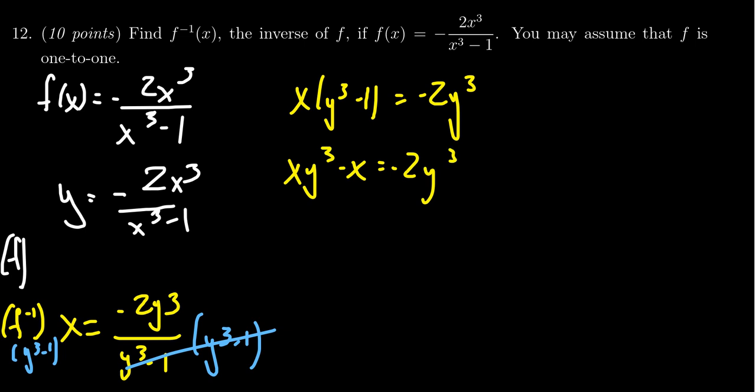I now want to combine together the y's that are separated. So I'm going to add 2y cubed to both sides, and I'm going to add x so that only the multiples of y are on the left hand side of this equation.